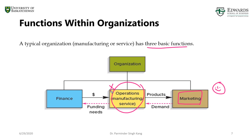The other important function that directly interacts with operations is finance. In order to run the operations — in simple terms, to manufacture products or goods — we need funds to purchase raw material, to pay labor, to pay wages, and to pay any other costs related to operations. Finance takes care of that and determines how we're going to make money by selling goods and services. There needs to be a synergy between the various functional areas within an organization so that your operations are effective and efficient.